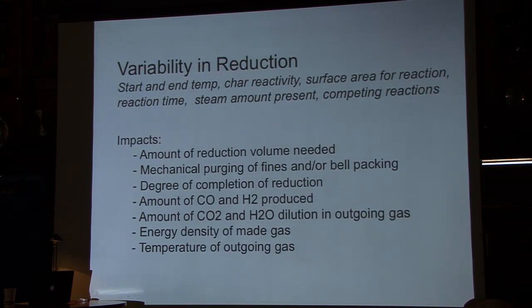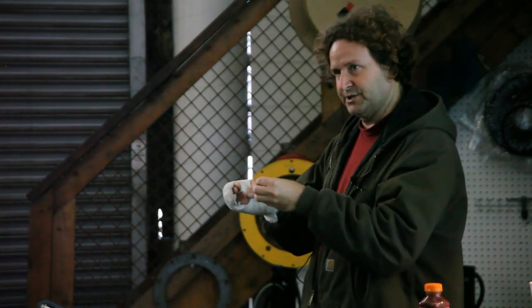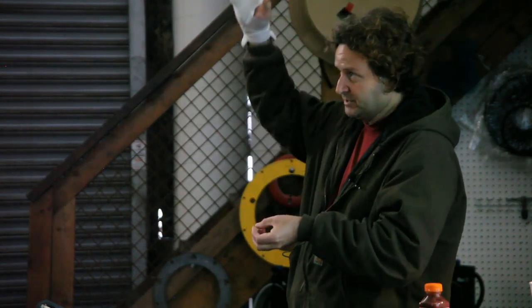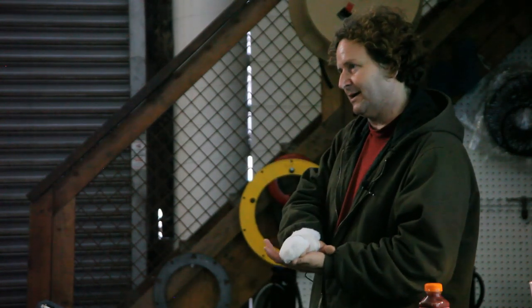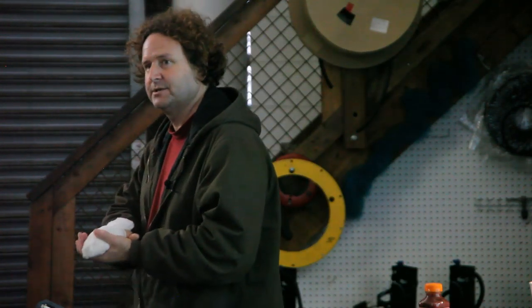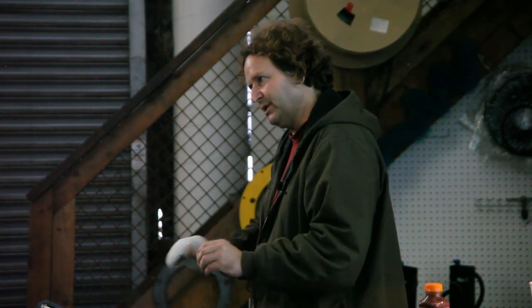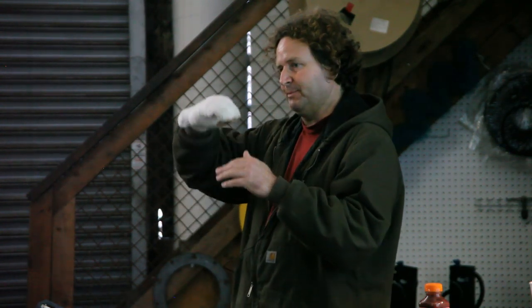All that thermochemical optimization is exciting, but at the end of the day, the thing that stops the show is that as material comes down and reduces chemically, it's also reducing in size. As it reduces in size, gas is coming down through it and gravity are going in the same direction — it likes to pack and make a cake. Bell packing is the biggest risk of failure while running these things. Keeping the small fuel moving and purging out of the system is a very significant challenge.